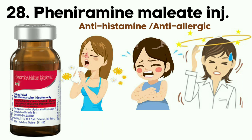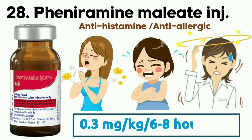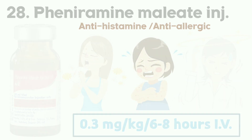Additional indications include travel sickness, perennial rhinitis, vasomotor rhinitis, and vertigo. Dosage: 0.3 mg per kg per dose, given every 6 to 8 hours IV.